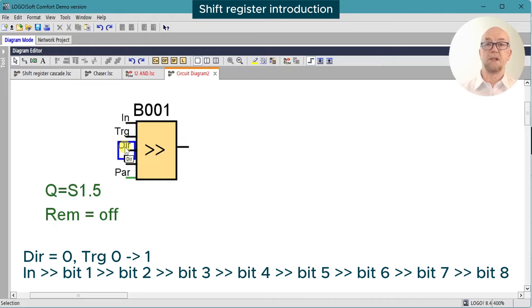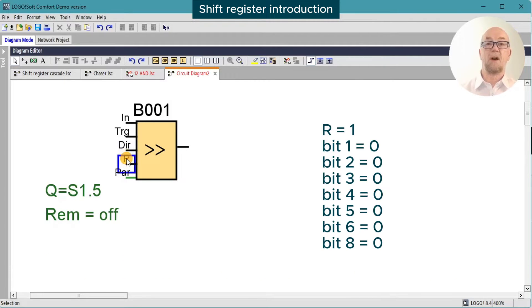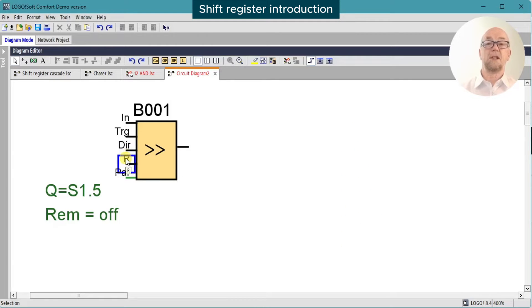If the direction pin is high during the trigger transition, the shift register will shift left. The reset pin will reset or clear all the bits of the shift register. The shift register output default setting is to turn on with the first bit, but can be modified to turn on with any one of the shift register's eight bits.